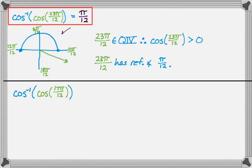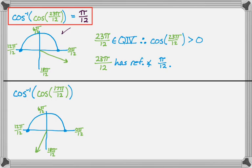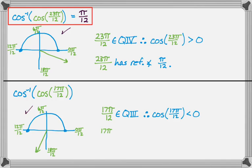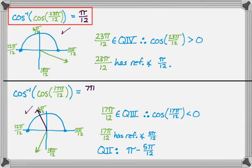Let's look at a similar problem: the inverse cosine of the cosine of 17π over 12. Using the same picture, 17π over 12 is between 12π/12 and 18π/12, so it's in the third quadrant. Therefore the cosine of 17π over 12 is negative, and since cosine is also negative in quadrant 2, I'm looking for a second quadrant angle. The reference angle is 5π over 12 — it's 5π/12 past π. In quadrant 2, the angle is π minus the reference angle, giving 7π over 12 as the answer.